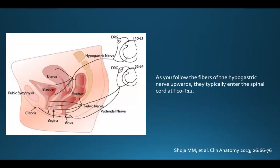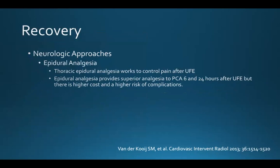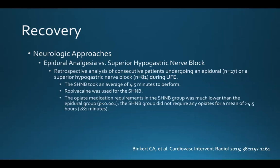Getting back to anatomy, as you follow the fibers of the hypogastric nerve upwards, they typically enter the spinal canal at T10 to T12. Some have theorized that a thoracic epidural can work to control pain after fibroid embolization. It was shown that epidural analgesia provides superior pain control to PCA intravenous medication at 6 and 24 hours after fibroid embolization, but this is associated with a higher cost and a higher risk of complications.